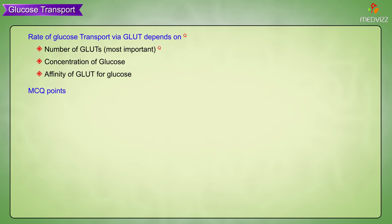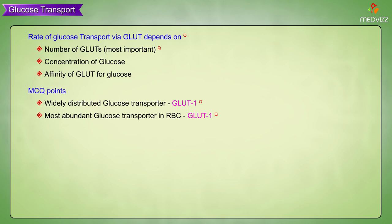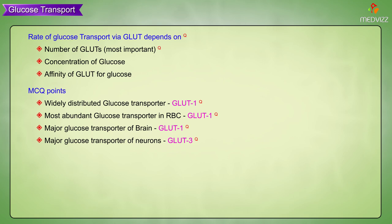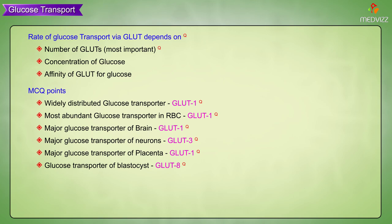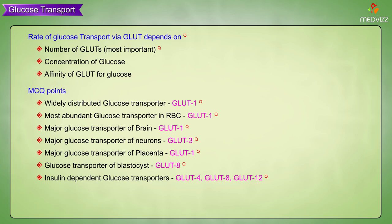Multiple choice question points: The most widely distributed glucose transporter is GLUT1. The most abundant glucose transporter in red blood cells is GLUT1. The major glucose transporter of the brain is GLUT1. The major glucose transporter of neurons is GLUT3. The major glucose transporter of the placenta is GLUT1. The glucose transporter of the blastocyst is GLUT8. Insulin-dependent glucose transporters are GLUT4, GLUT8, and GLUT12.